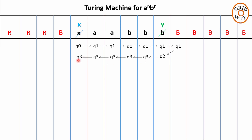The responsibility of state q2 is to check whether the last symbol is b or not. q2 will replace the last symbol with y only if the last symbol is b, and after that the machine takes a left move and changes its state to q3. The responsibility of q3 is to skip all a's and b's in between to reach the next leftmost symbol a in the remaining string. As soon as q3 reaches the symbol x, it takes a right move and changes its state to q0. We have again reached q0, meaning one iteration is complete, and the next iteration begins.